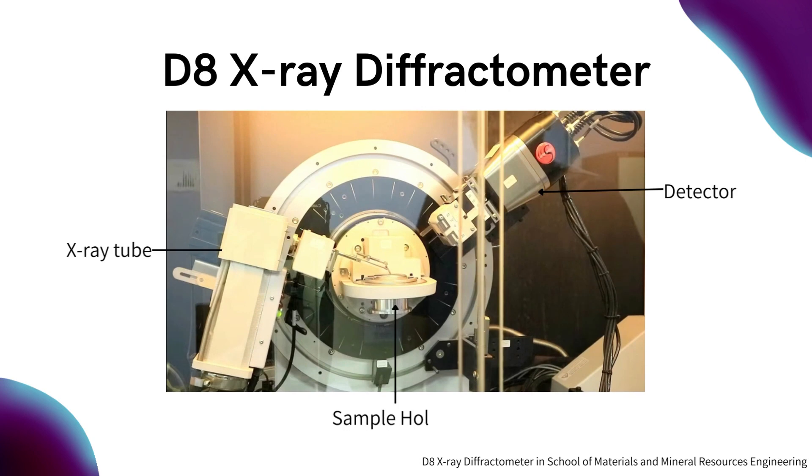This is an example of D8 X-ray diffractometer. It mainly consists of three components which are the X-ray tube, sample holder, and the detector.